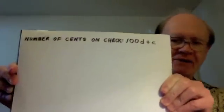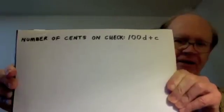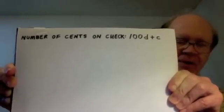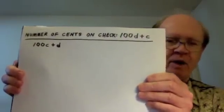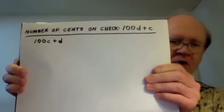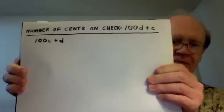I will have D stand for the number of dollars on the check and C the number of cents on the check after the decimal point. And so the total number of cents on the check is 100D plus C. But we are told the teller gave the number of dollars as cents and the number of cents as dollars. And so the initial amount the teller gave the customer was not 100D plus C, but 100C plus D.